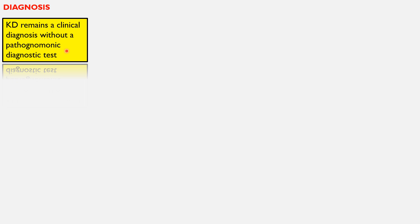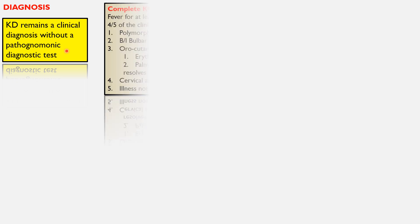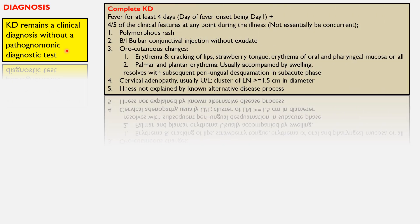It continues to be a clinical diagnosis without a definitive pathognomonic test. Complete Kawasaki disease requires two main things: first, fever for at least four days, with the day of fever onset counted as day one, and four out of the following five clinical parameters.